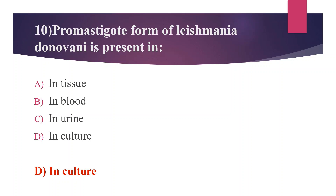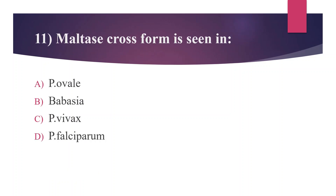Eleventh question: Maltese cross form is seen in — Option A: Plasmodium ovale, Option B: Babesia, Option C: Plasmodium vivax, Option D: Plasmodium falciparum. The answer is Option B, Babesia.